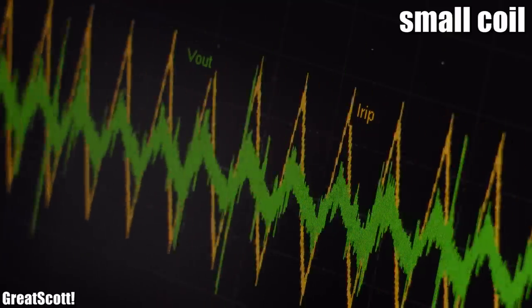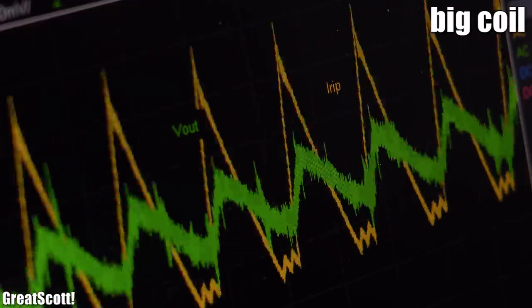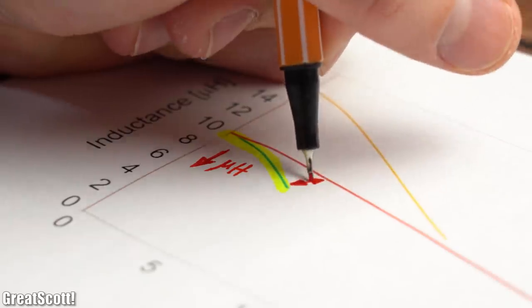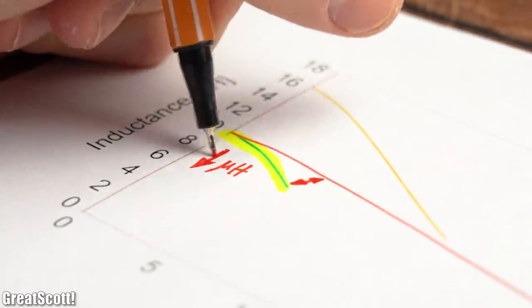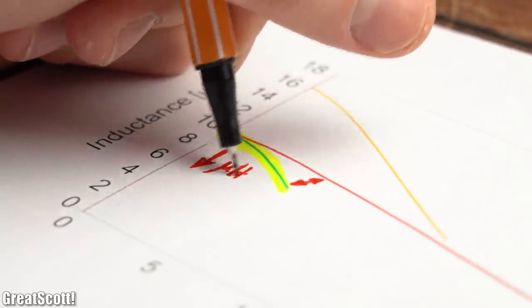But it is not a surprise that the physically smaller coil starts causing problems at higher output currents before the bigger coil does. One of the reasons is that the smaller coil reaches its magnetic saturation earlier, and thus its inductance gets decreased.